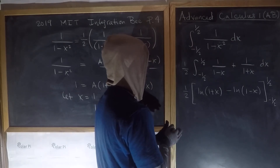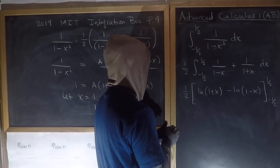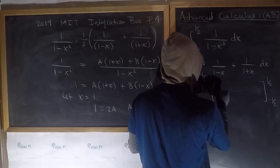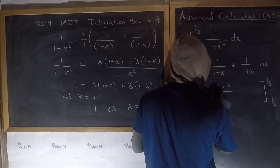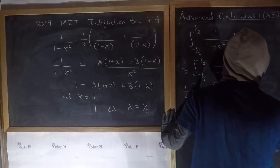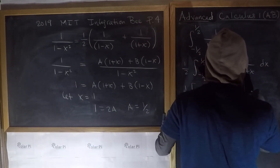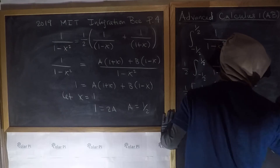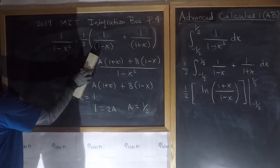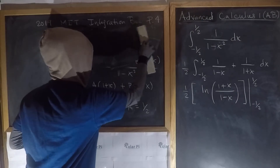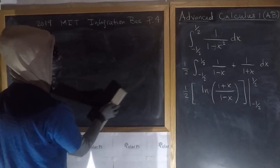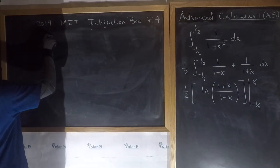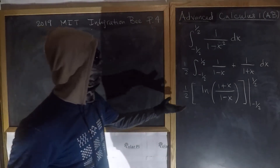Using the log rule that log A minus log B equals log(A/B), we can write this as ln of (1 plus x) over (1 minus x), evaluated from negative one half to positive one half, all multiplied by one half out front.